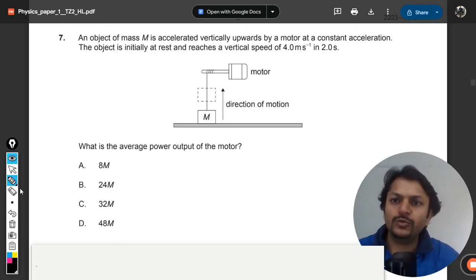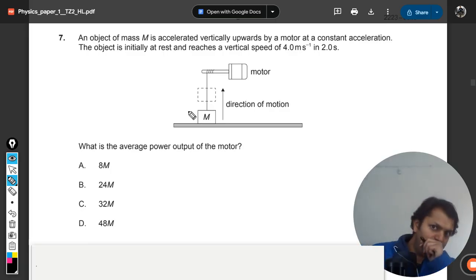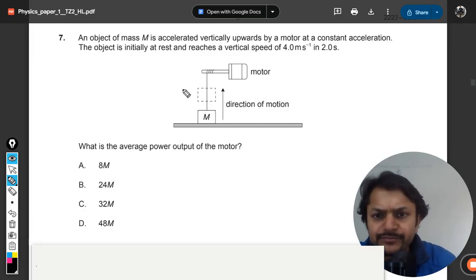An object of mass m is accelerated vertically upward by a motor at a constant acceleration. The object is initially at rest and reaches a vertical speed of 4 m/s in 2 seconds. So the speed is 4, initially zero, and the time taken is 2 seconds.